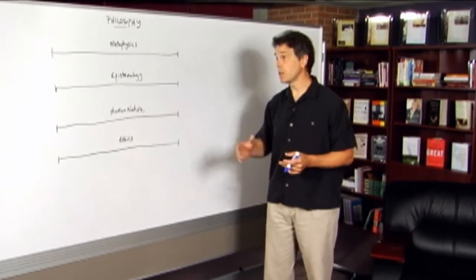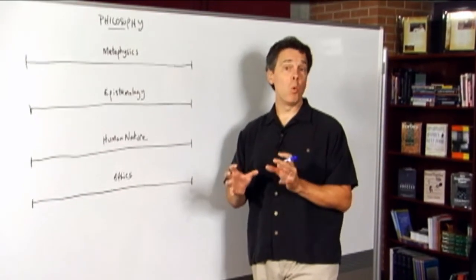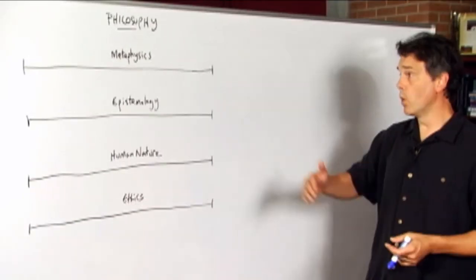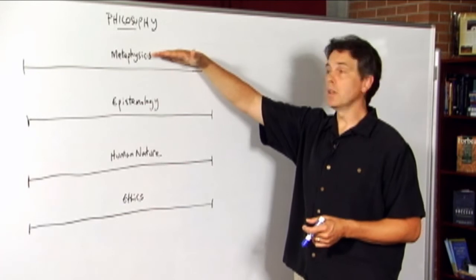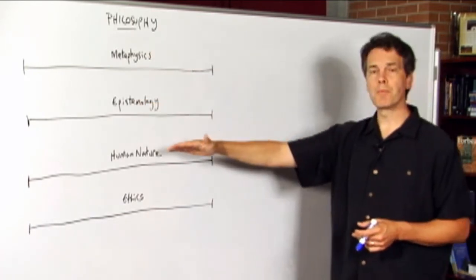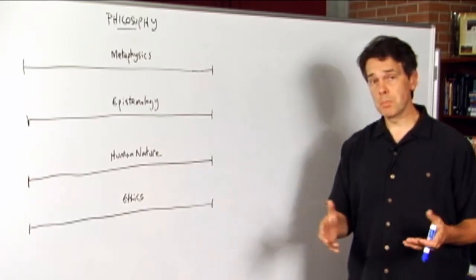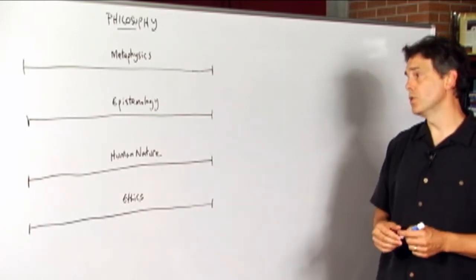Then what we did was we took each of those branches and we had a unit where we looked more in-depth at one major issue. We looked at one major issue in metaphysics, then one major issue in epistemology, and then the same for human nature and for ethics, and along the way we sketched some implications for educational practice.